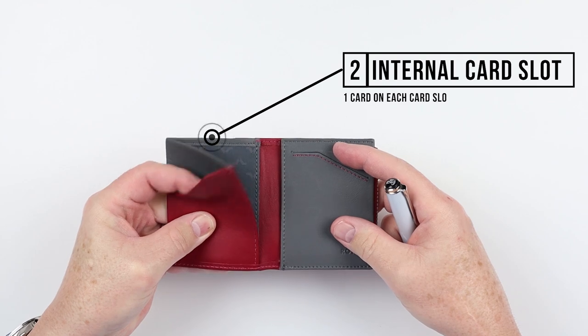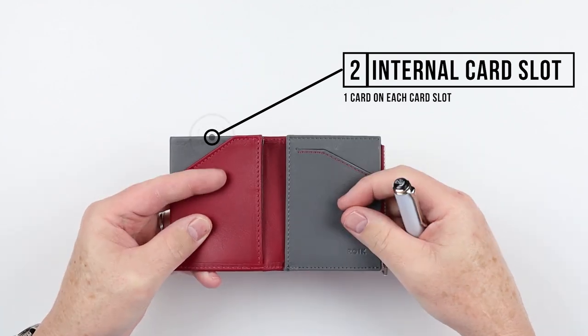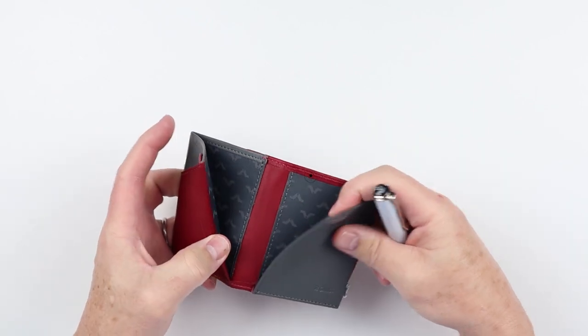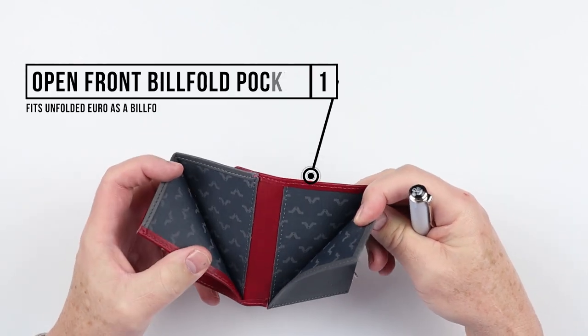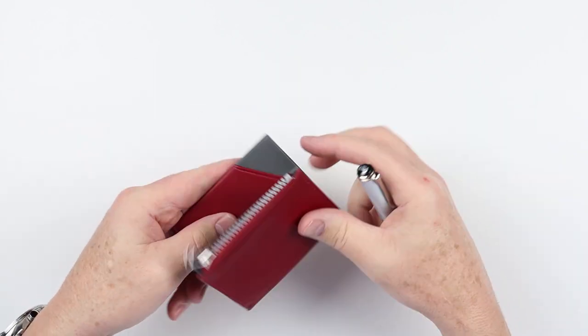So if we move to the interior, we have one slot here on the left, another card slot here on the right. And if we open it up, this is an open billfold design. We are starting to see more of these, and that's where your cash would go.